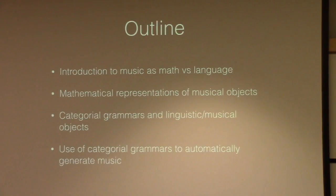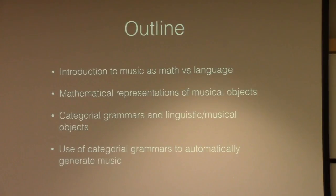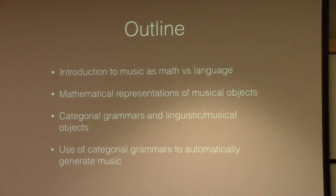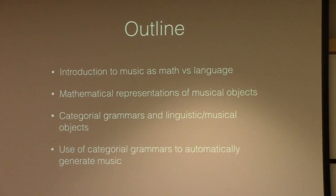So what am I going to talk about? First I'll go a little bit broad and introduce the tension between viewing music as mathematical, formal, computational versus linguistic, expressive, meaningful. Then I'll focus on the mathematical representation of music — musical objects. Then I'll discuss linguistics, categorical grammars, and their use in describing music, and finally we'll actually get to hear some music generated using these categorical grammars.